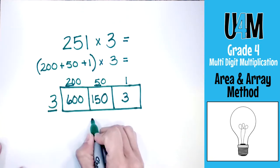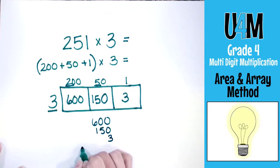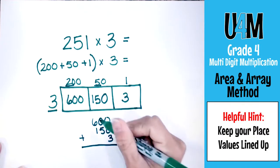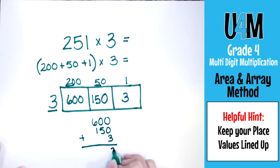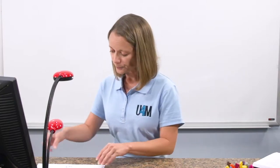Now that I have all the parts of the product, I'm going to add them together: 600, 150, and 3. Make sure you line up your place values to get the proper product. The answer we get is 753. Although it looks like it takes a lot of time, the more students do this the quicker it becomes, and they understand how they're getting those products instead of just following a memorized algorithm.